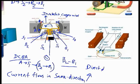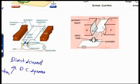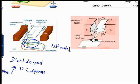There's one more point to be understood: what is a commutator? After the completion of every half of the cycle, after half rotation is over, the split rings change contact.